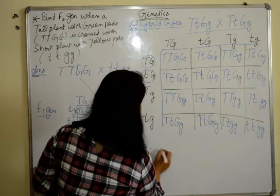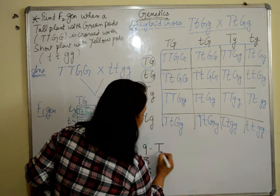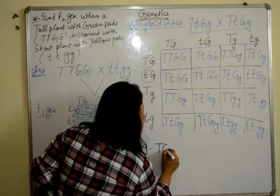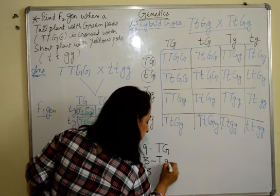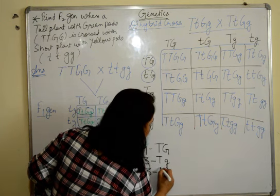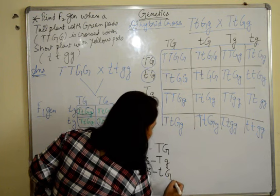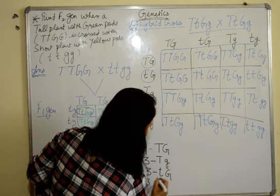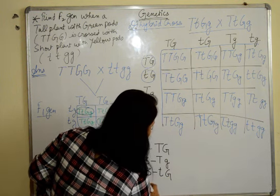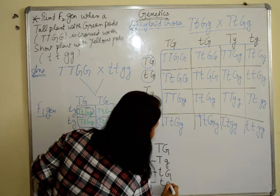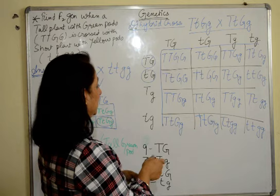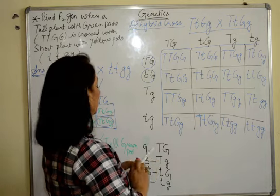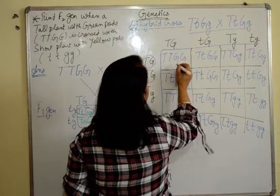So that is 9 is to 3 is to 3 is to 1. So now, we will find out. First of all, 9, those where T is capital and G both are capitals. This where T is capital but the G's are small. This where the T is small but G is capital. And the last one wherein both are small. So we are going to find out in how many boxes which combinations present are. Let's just start.